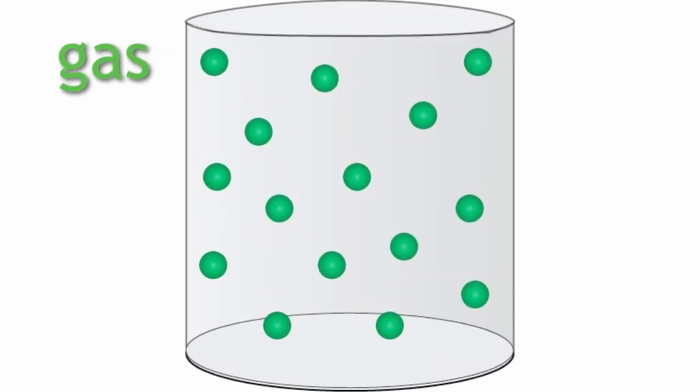This of course explains why a gas takes the shape of its container. It's because the particles will each continue to travel in a straight line until they hit something, in this case the wall of the container.